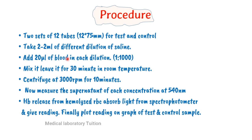For the procedure, prepare two sets of 12 tubes in a rack — one set for test and one for control. Take 2 ml of each different dilution of saline into both sets of tubes. Then add 20 microliters of blood into each dilution, making the dilution 1:2000 because 1 ml has 1000 microliters. Mix and leave for 30 minutes at room temperature, then centrifuge at 3000 rpm for 10 minutes. Measure the supernatant of each concentration at 540 nanometers, as hemoglobin released from hemolyzed RBCs absorbs light.